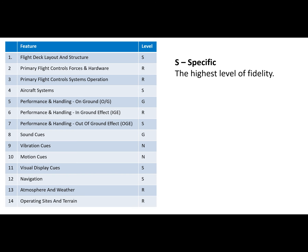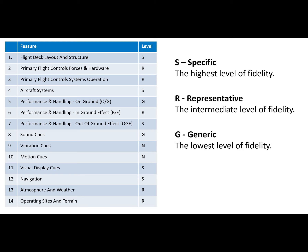There are four different levels. S stands for Specific — it means very realistic simulation. R stands for Representative — it means an intermediate level of realism. G stands for Generic — it is the lowest level and means simple modeling of key elements only. N stands for None, or not simulated. CS-FSTD will give clear requirements for all these levels for all the features, so the FSTD qualification certificates will give objective information of the capabilities of each FSTD.